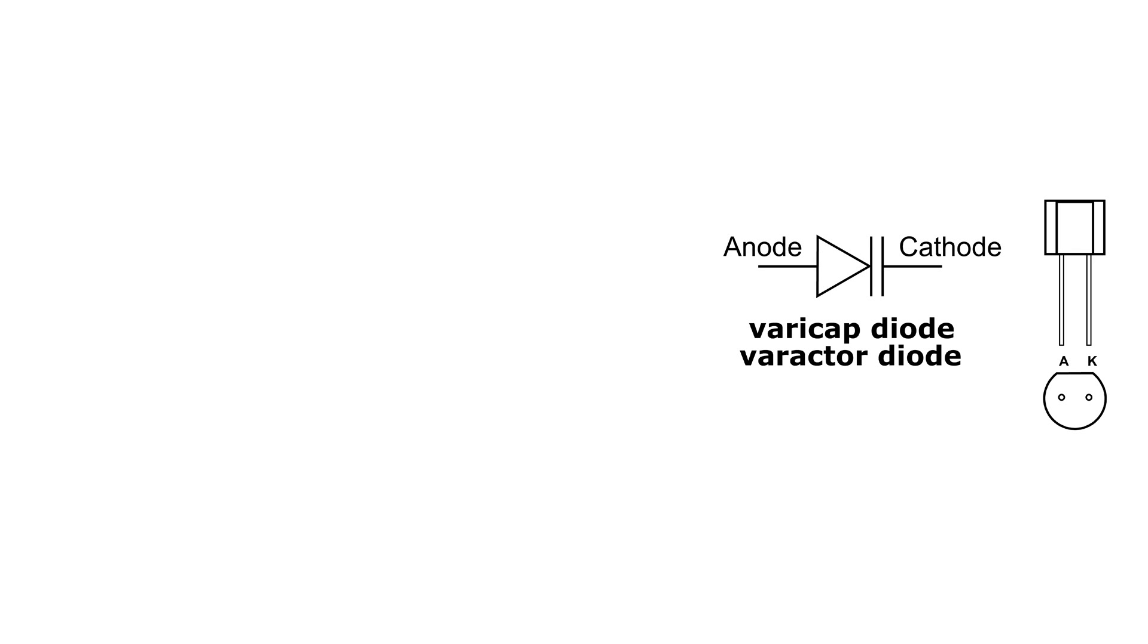In the video before this one we took a look at the capacitance of a varactor diode, how it changes when a voltage is applied in the reverse bias. As the voltage increases, the capacitance decreases.